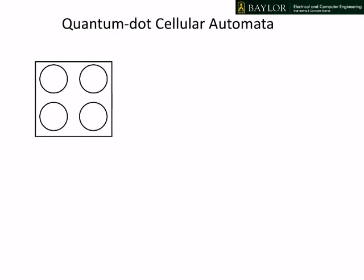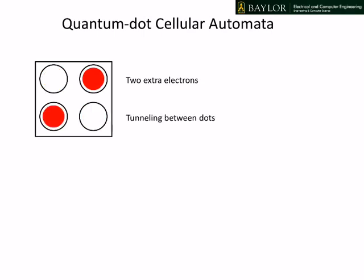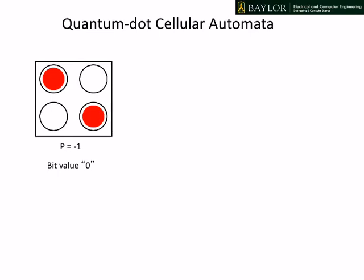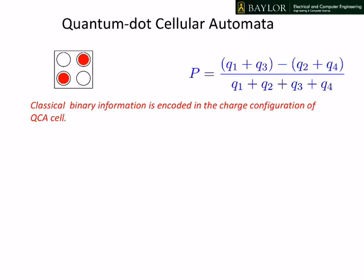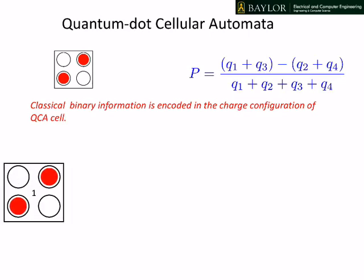Here's an overview of how QCA works. The basic computing element in QCA is the QCA cell. A simple cell has four circles representing four quantum dots. A quantum dot is a place that localizes mobile charge. If we have two extra electrons occupying these dots, they're going to want to occupy antipodal sites. If we allow tunneling between the dots, we have device switching between two states: the zero with polarization of minus one, and the one bit with polarization of plus one. Polarization is a function of mobile charge on the dots, and we've encoded binary information on the charge configuration of the QCA cell.